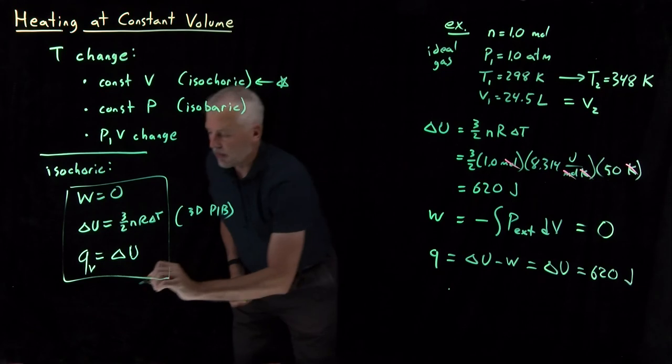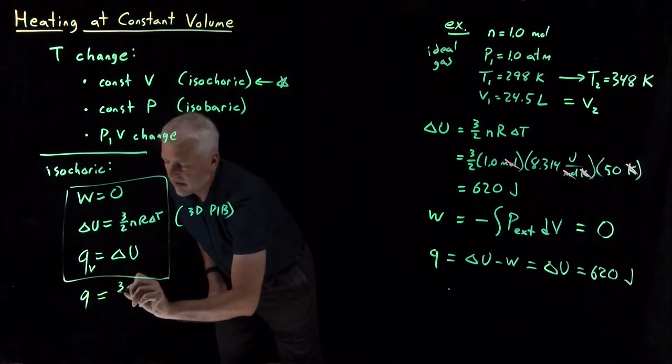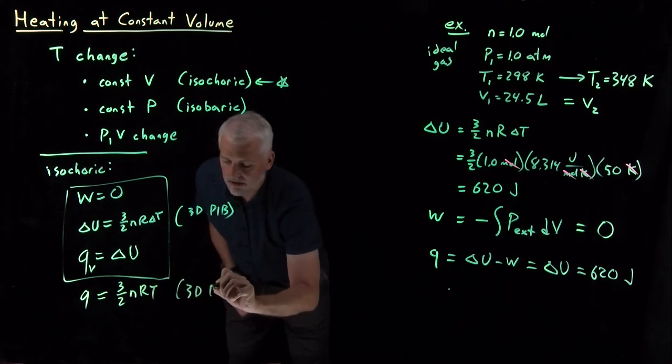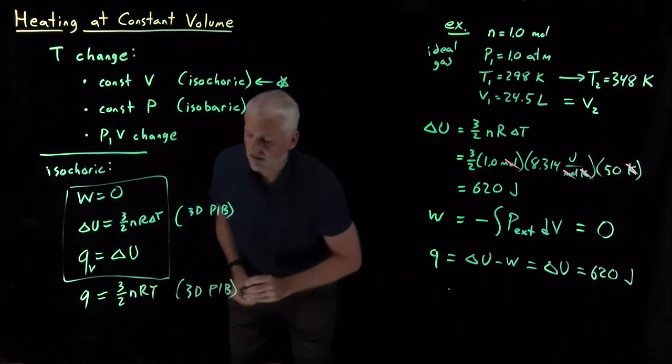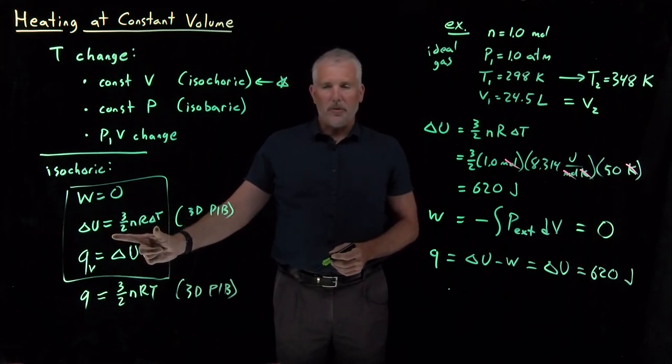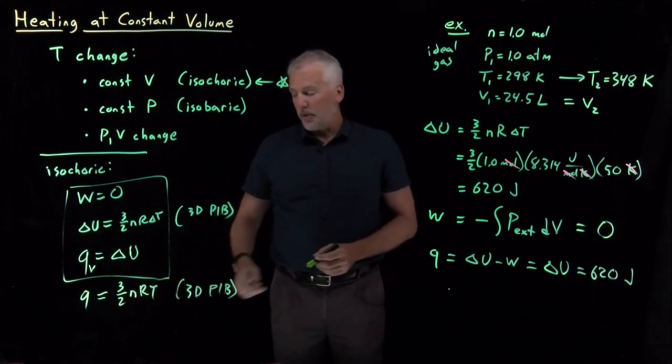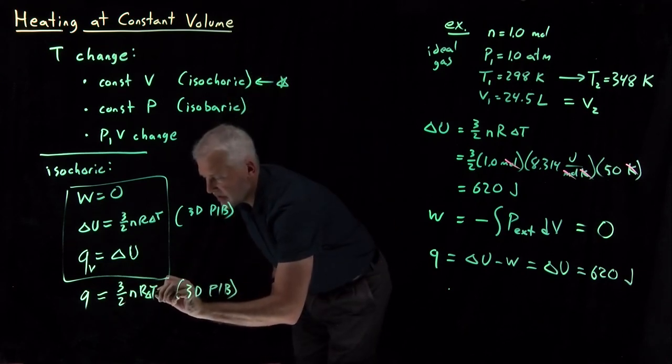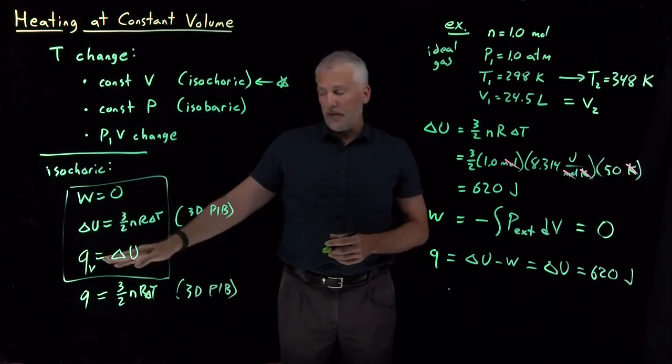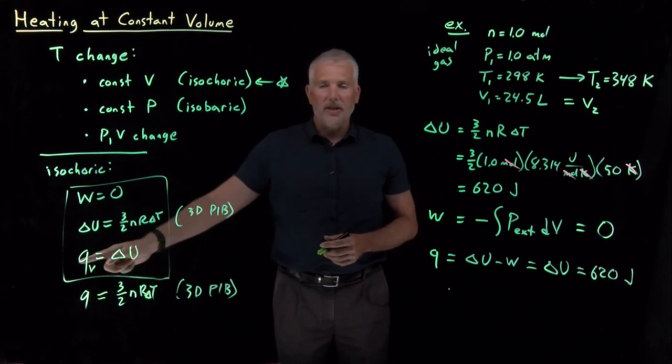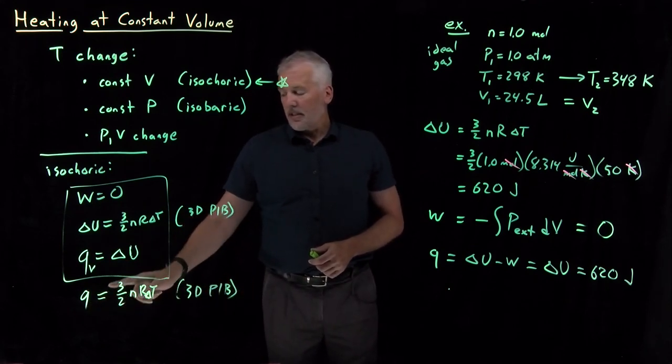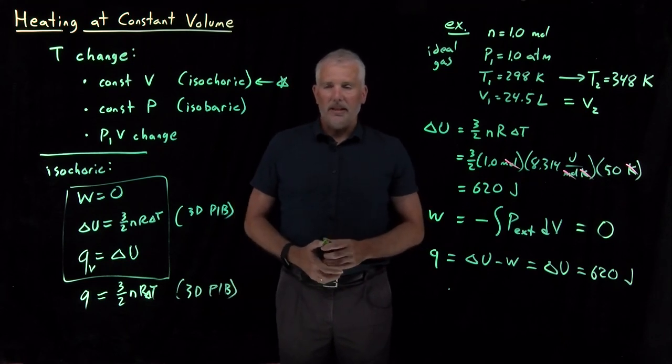And for the more specific case of an ideal gas or something that obeys the 3D particle in a box model, then Q is equal to delta U. And if delta U is equal to 3 halves nR delta T, then Q is also equal to 3 halves nR delta T. So the more general case, any time we have a constant volume process, heat and energy will be the same. If it happens to be an ideal gas, then it's this multiple of 3 halves nR times the change in temperature.